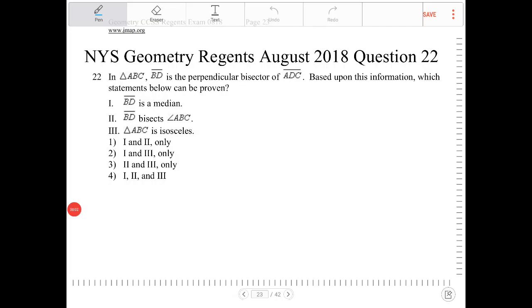In triangle ABC, BD is the perpendicular bisector of segment ADC. So let's draw that out. Triangle ABC, BD is the perpendicular bisector of segment ADC. So I have ABC and drawing a line BD, and it is a perpendicular bisector.